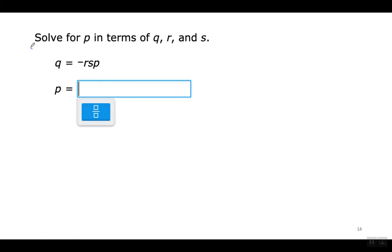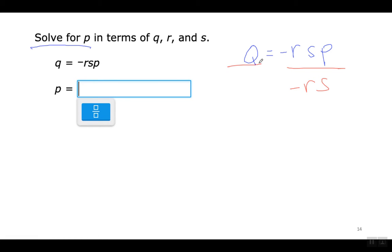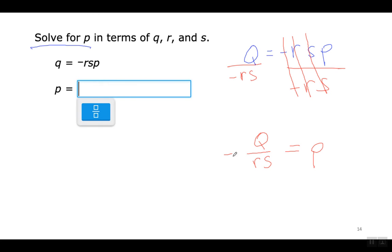Solve for P. I have Q equals negative RSP. The quickest way is to divide both sides by negative RS all at once — everything on the right cancels out and P equals negative Q over RS. The whole thing is negative. I would put the negative sign on the numerator, but putting it on the denominator is also accepted. P equals negative Q over RS.